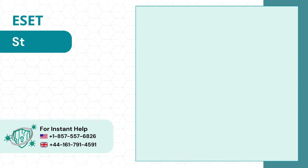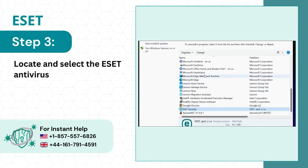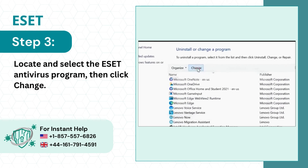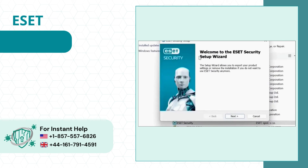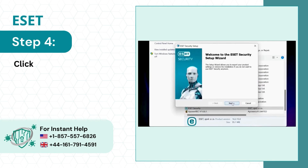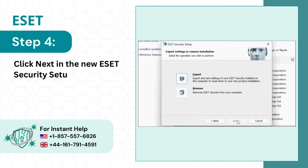Step 3: Locate and select the ESET antivirus program, then click Change. Step 4: Click Next in the new ESET security setup, then select Remove.